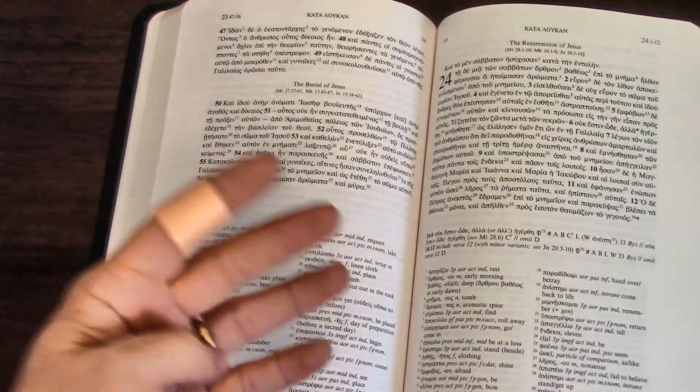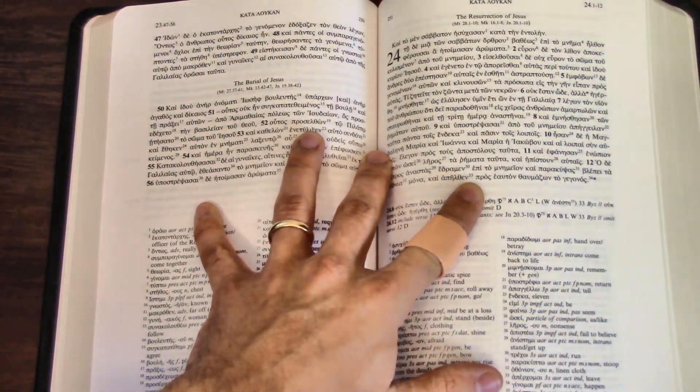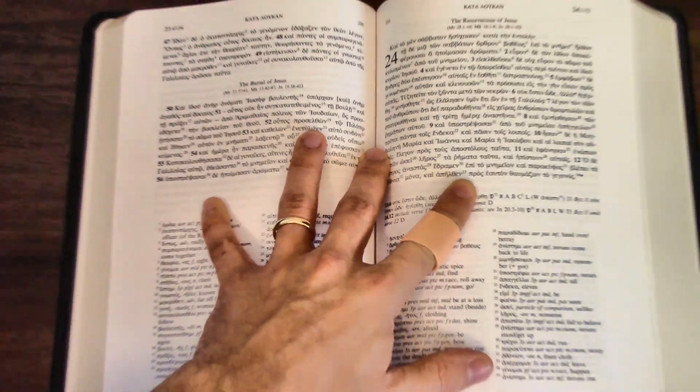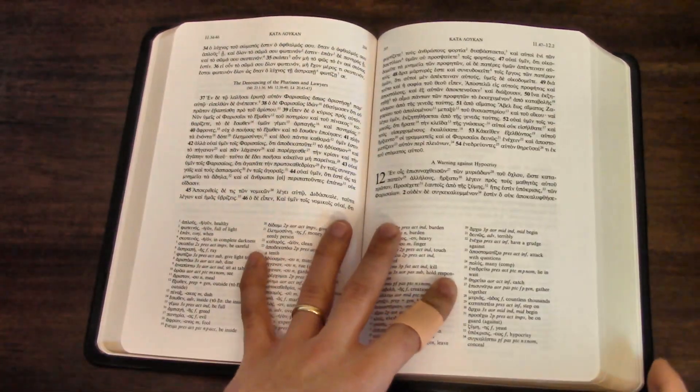And this is the fourth edition of UBS, which means there's going to be some differences between this text and the most recent critical editions, but those are mostly in the general epistles and there's not too many of them. So this is going to be a really good reader's edition.